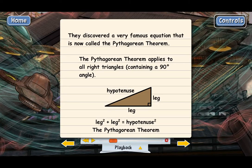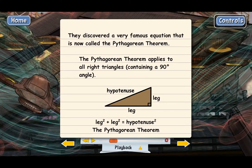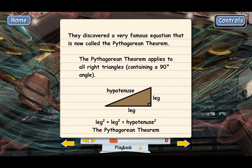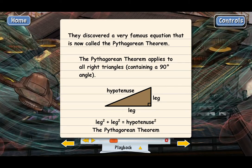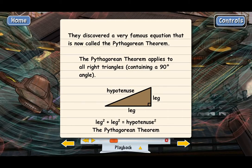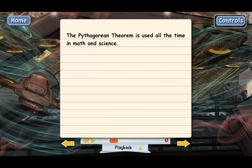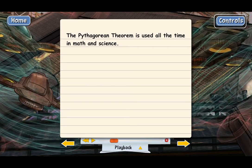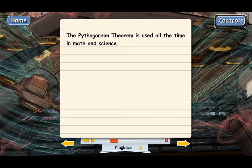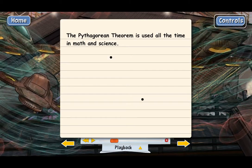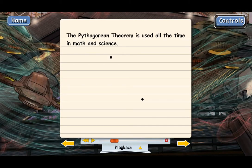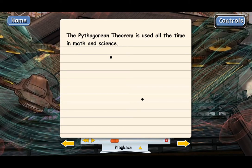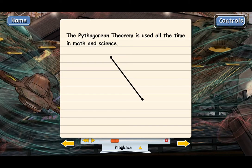Amazingly, it will work on any right triangle, no matter what its shape is, as long as it's got a right angle. The Pythagorean theorem is used all the time in math and science — it's extremely practical. For example, let's say you wanted to know the distance between two points, maybe on a map. Basically, what you're trying to do is calculate the length of a line segment.